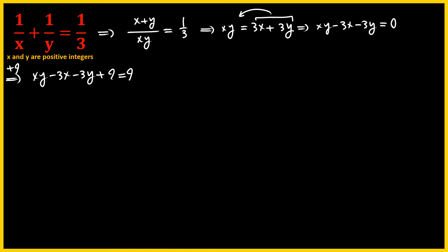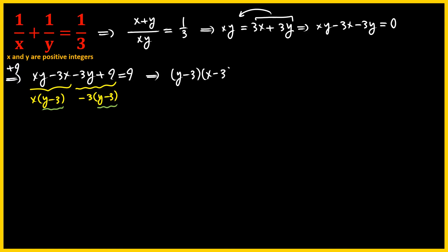Now I can factor x out of the first two terms to get x times (y minus 3), and factor negative 3 out of the remaining terms to get negative 3 times (y minus 3). Since (y minus 3) is the common factor, we pull it out and get (y minus 3)(x minus 3) equals 9. That's the reason I added 9 — to make the left-hand side a factorable expression.